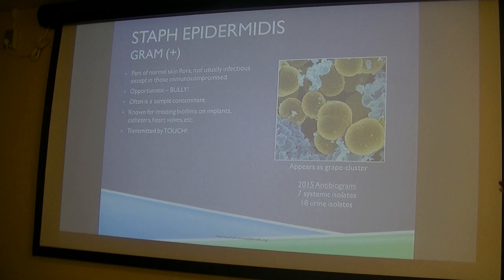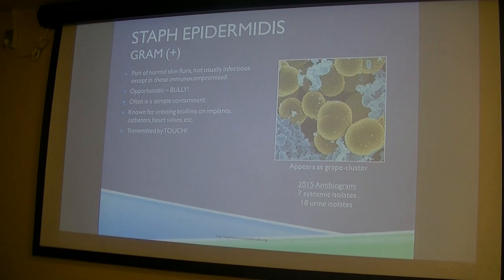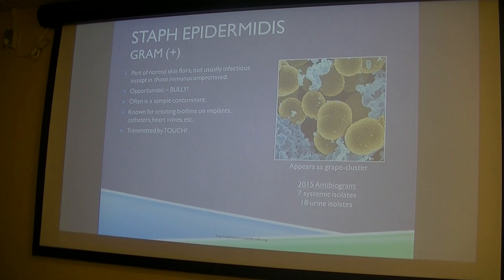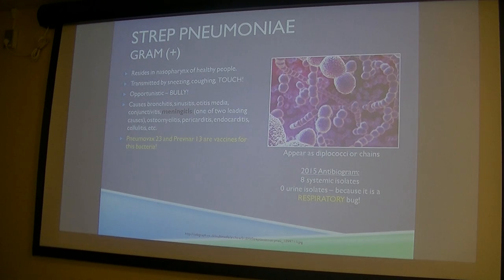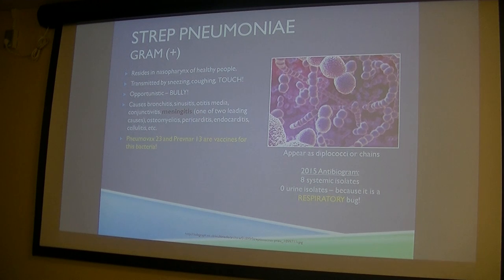Gram-positives at our hospital are mostly round-shaped. Staph epidermidis is also all over our skin and is famous for creating biofilms on implants. In 2015 we had 7 systemic and 18 urine isolates. Also transmitted by touch and is an opportunistic infection. Strep pneumoniae had 8 systemic isolates in 2015 and zero urine isolates because it's a respiratory bug — it's important to know where these things live.